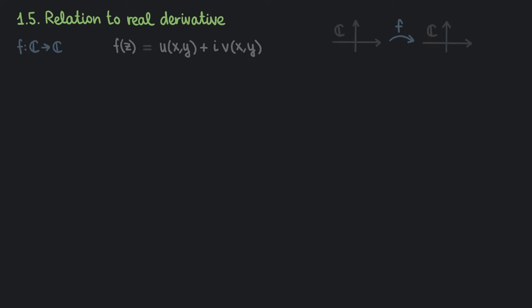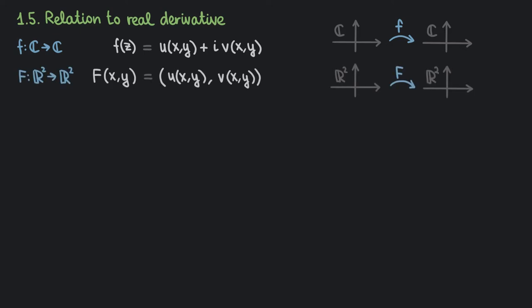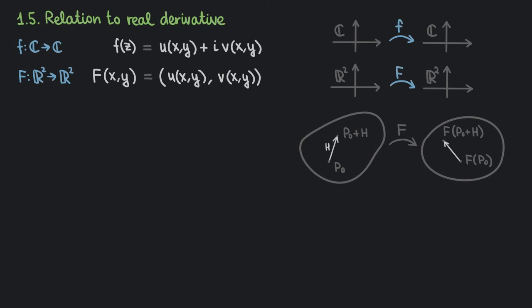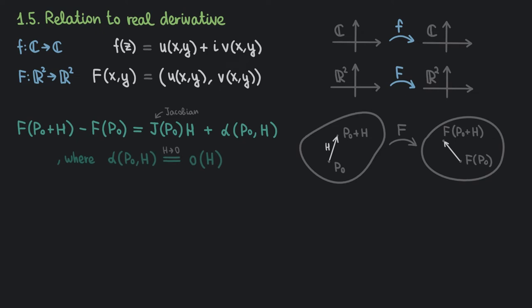Let's consider holomorphic f : ℂ → ℂ and associate with it a real function F : ℝ² → ℝ² that maps points (x, y) to points (u, v). Our goal is to find a connection between the derivatives of f and F. On ℝ², consider a point P₀ with coordinates (x₀, y₀) and a small increment h with components h₁ and h₂. If F is differentiable in the real sense, we can write the increment as J·h + α, where J is the Jacobian of F — now playing the role of a derivative — and α is smaller in order than h as h → 0. Written explicitly, J is a 2×2 real matrix with elements being the partial derivatives of u and v with respect to x and y.